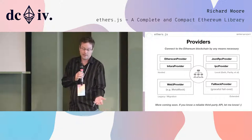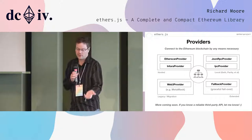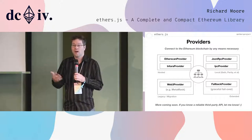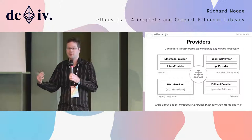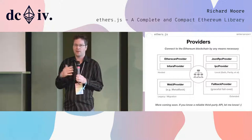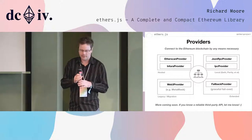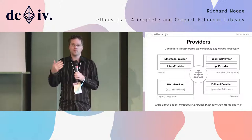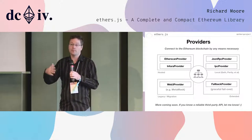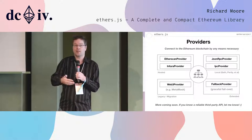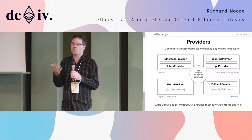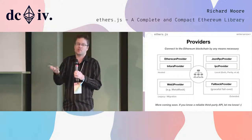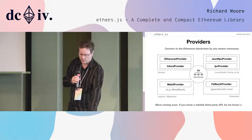Going back to providers, there are lots of different types: Etherscan, Infura, JSON RPC, IPC, WebSocket is coming soon. There's a Web3 provider — if you have an existing Web3 app, you just wrap it in a Web3 provider and now you have an ethers-compatible provider. There's a fallback provider, and we're coming with a smart provider soon, which will get quorum against multiple backends, because right now you're trusting APIs. You're trusting that Etherscan tells you the truth — what if they're hacked, or you're at Starbucks with SSL protection turned off?